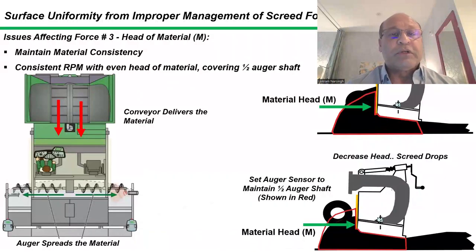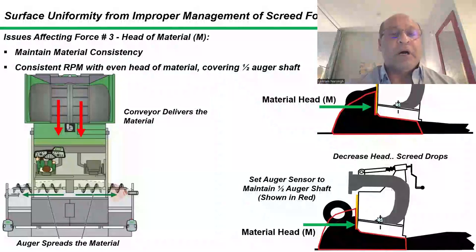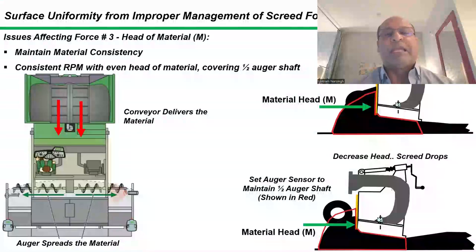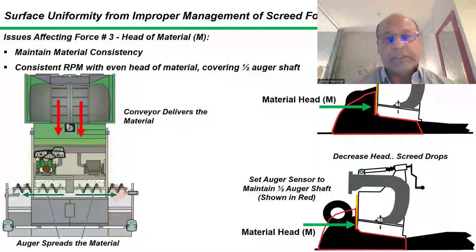The other is a material force. We must keep the auger and conveyor turning consistently, covering about half the auger shaft. That way, we maintain the material consistency and minimize auger and conveyor segregation.